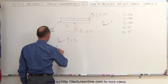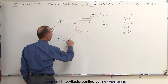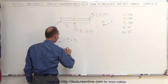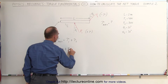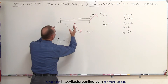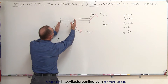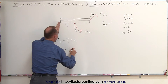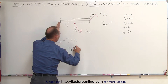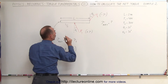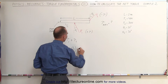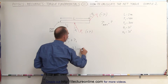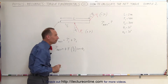So when we add them together, the net torque is equal to the torque caused by force 1, which is going to be positive. We multiply the force times the distance from the pivot point to where the force is acting, which is L over 2, times the cosine of the angle between the perpendicular and the direction of the force — in this case, the cosine of theta sub 1.